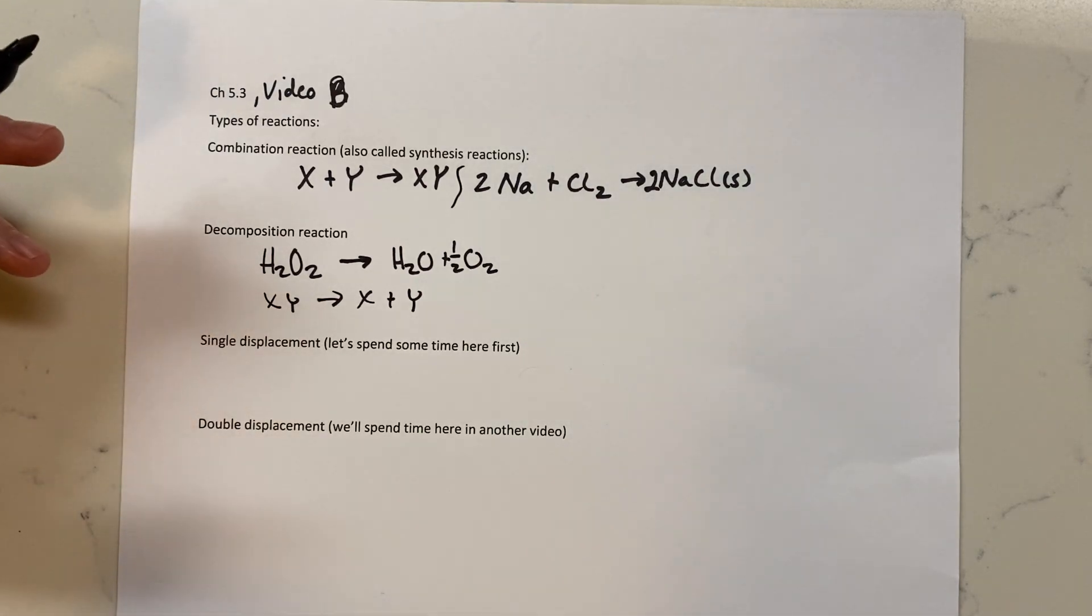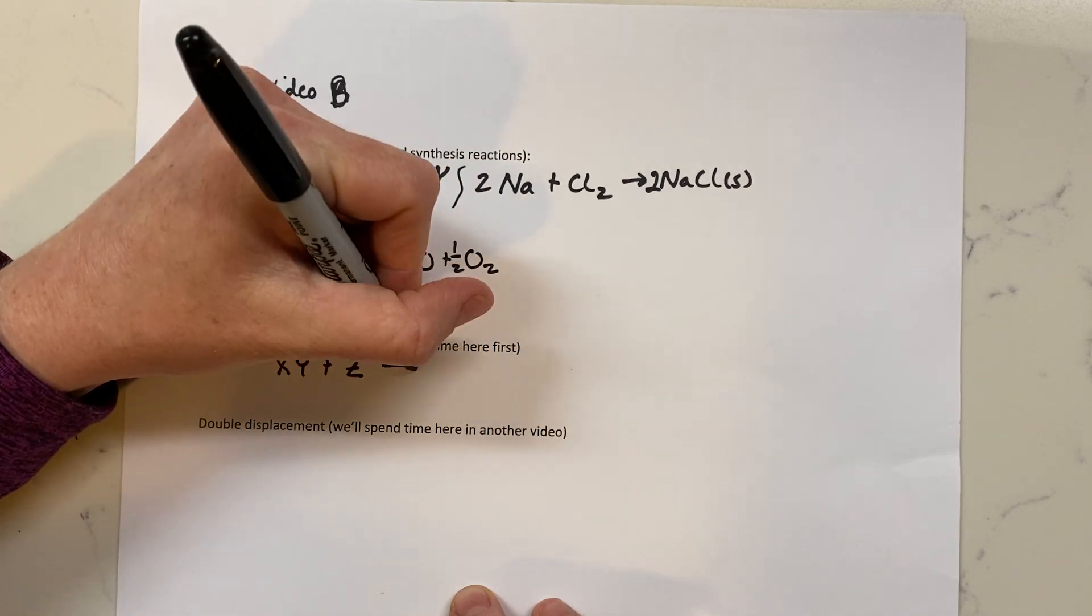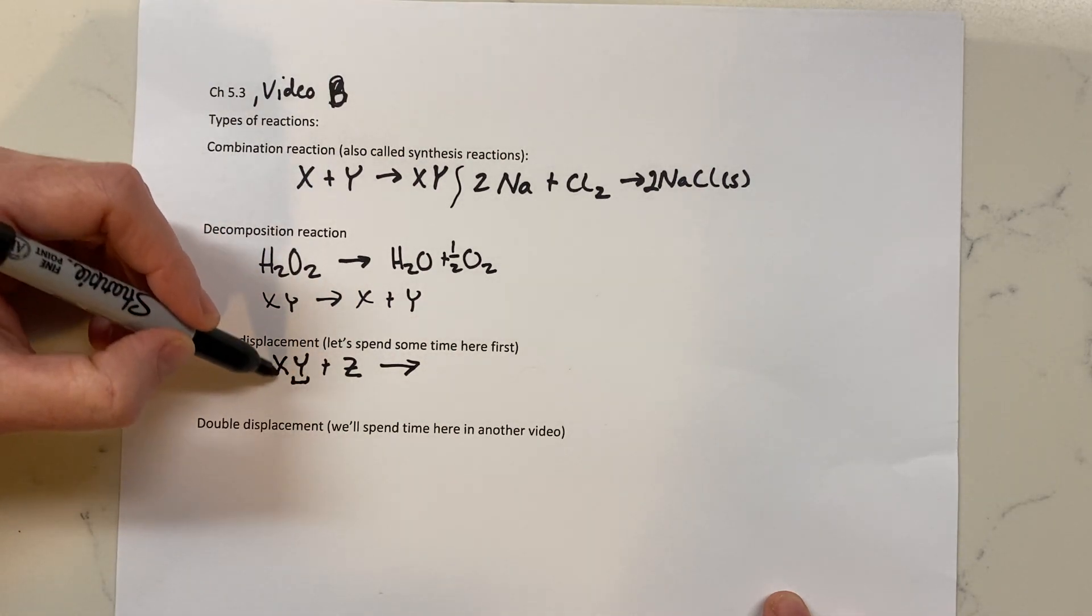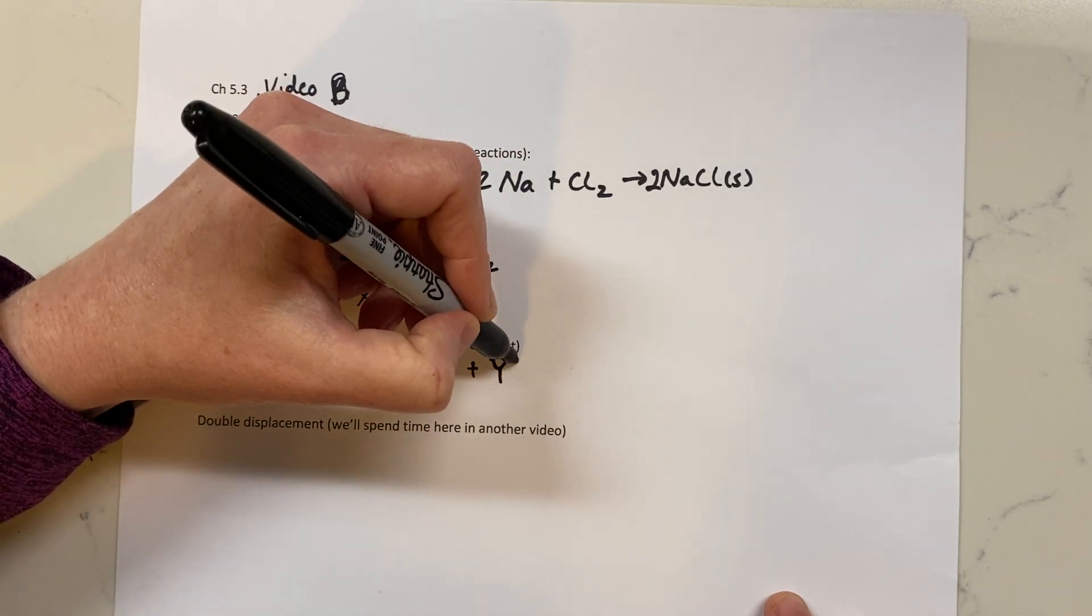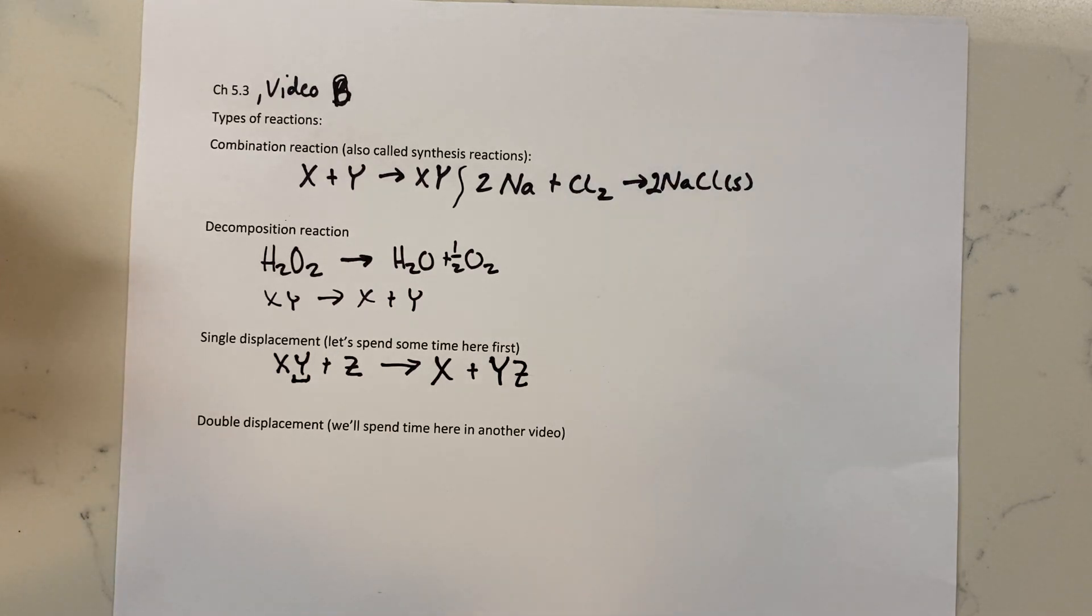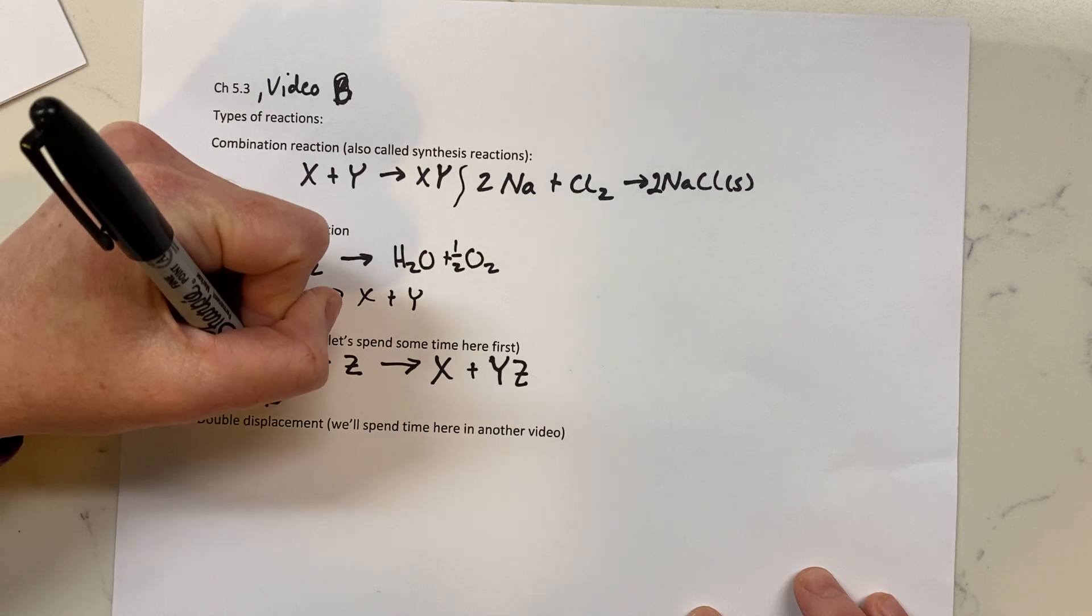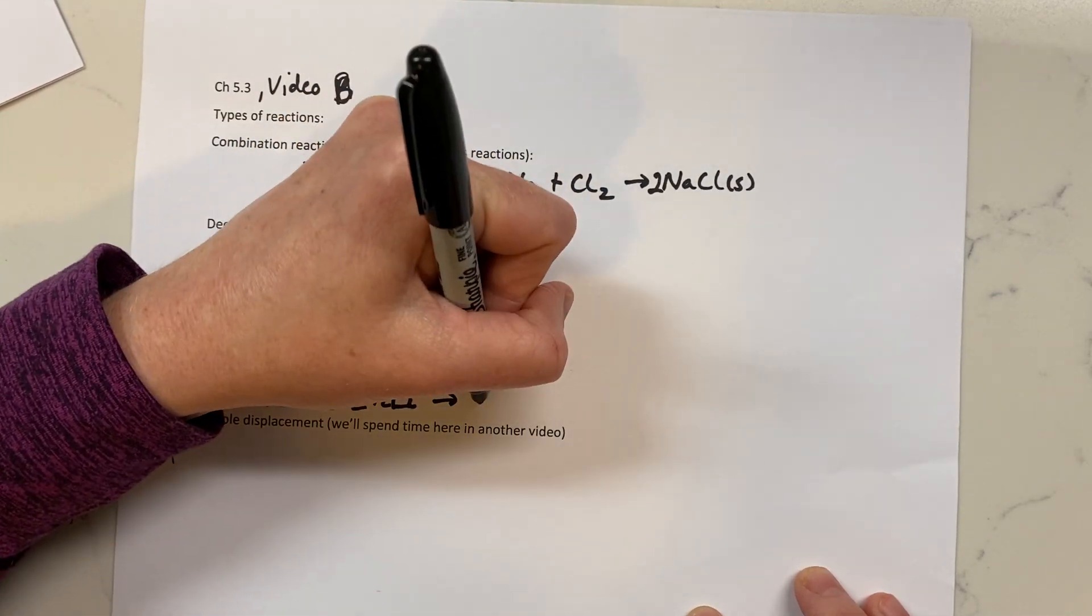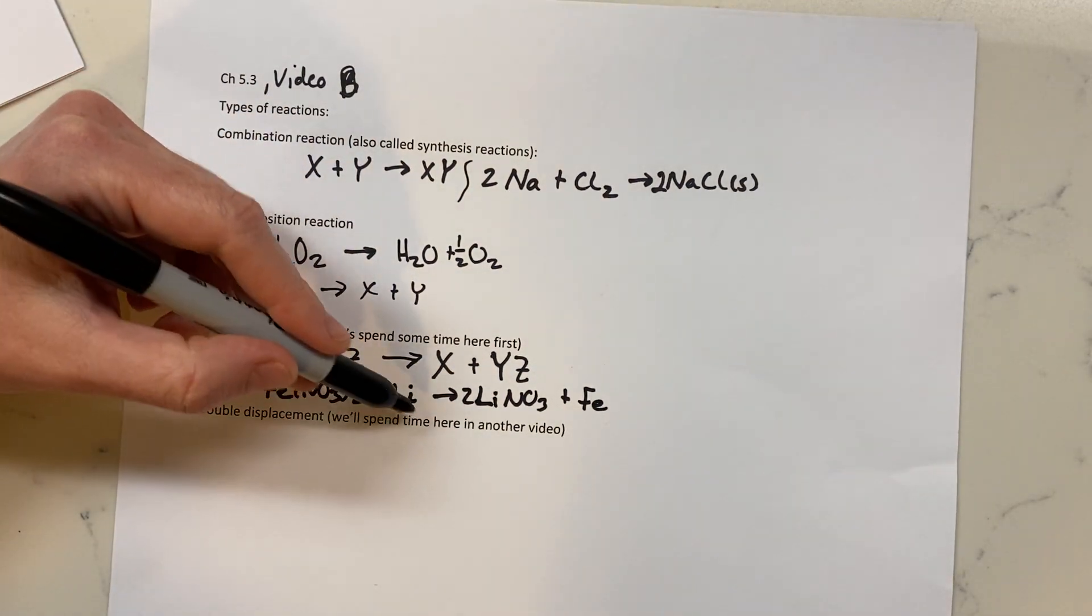Then we have a single displacement reaction, where we'll be spending a lot of time. A single displacement reaction would be something like we have some XY plus Z. Single displacement means one single thing is going to be displaced. And in this case, it's usually the anion. So if we have some kind of ionic compound, a cation and an anion bound together, we react with something else and this anion is actually going to move over here. So we'll end up with X plus YZ.